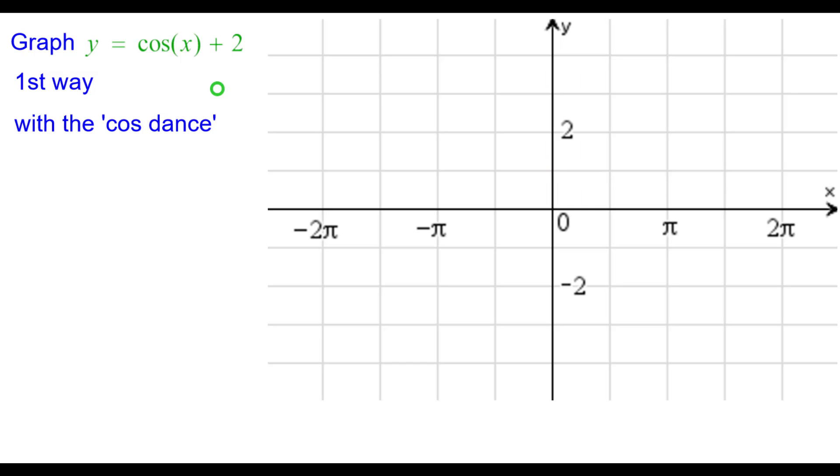The first way is with what we call the cosine dance. We need to recall what the graph of y equals cosine of x looks like and notice the five key points of interest.